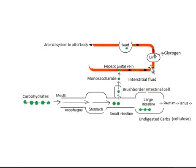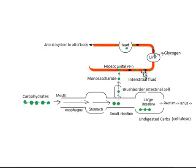So the glucose is absorbed — or crosses from the intestine lumen into the circulation. Once it's in the circulation, the circulation will transport these monosaccharides, basically glucose, into the liver, and the liver will distribute it to the muscle cells and other cells for metabolism.